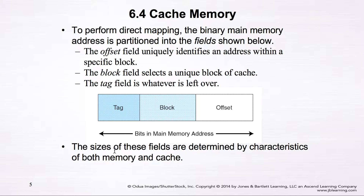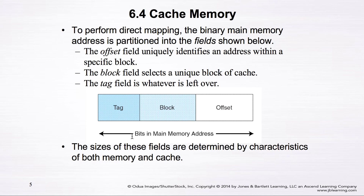The size of the three fields is determined by the characteristics of both memory and cache, so there is an association between both memory and cache structure. In the next video, we'll show how to use the different fields to see the mapping between memory and cache.